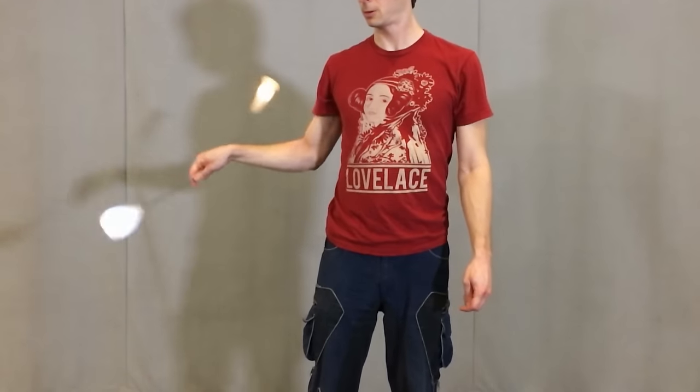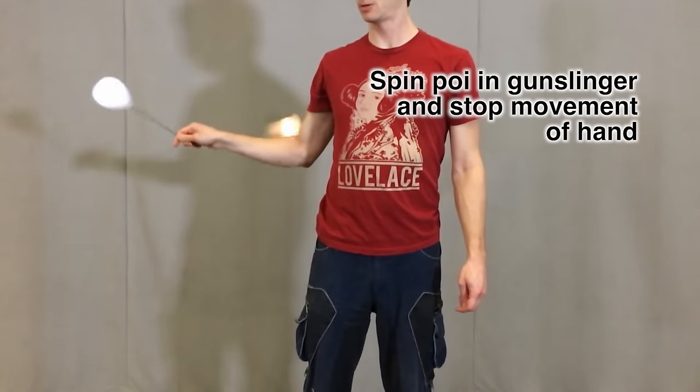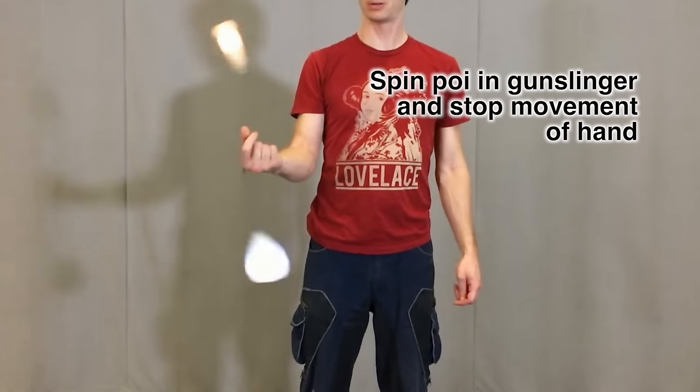If you're gripping the poi at its balance point and both ends are spinning, you enter the spiral wrap by freezing your hand in mid air and allowing the tether to wrap around your hand.